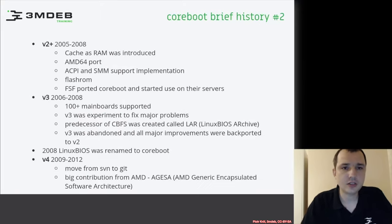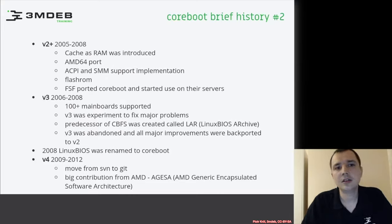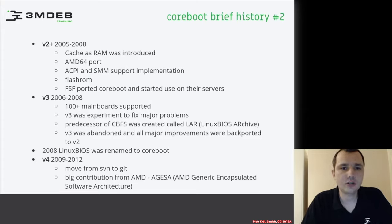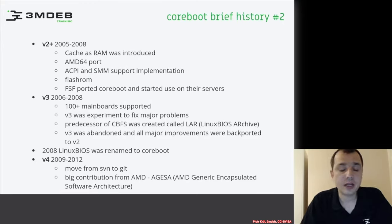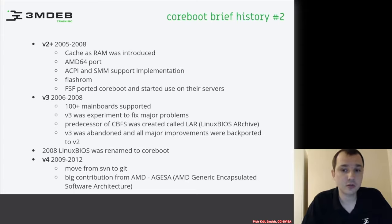Then we had another stage, we can call it version 2 plus, from 2005 to 2008, where there was introduction of cache as RAM, AMD 64 port, and ACPI and SMM support was added. There was the Flashrom project created which helped in flashing Linux BIOS or Coreboot binaries.